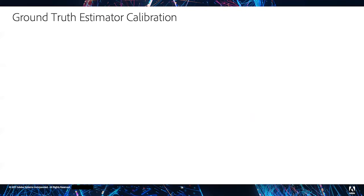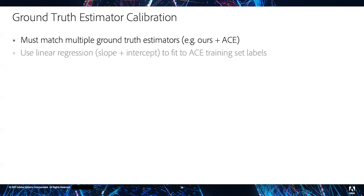As a final step of our data creation, we must calibrate our T60 and DRR labels from our ground truth estimators to those of the ACE challenge training dataset, not test set. For this, we simply use linear regression with slope and intercept terms and reduce the prediction error between our estimator and the labels provided by the ACE training set.